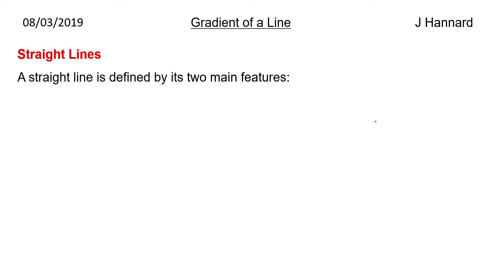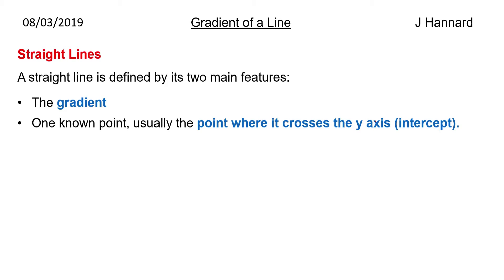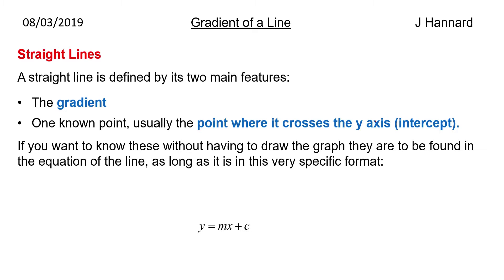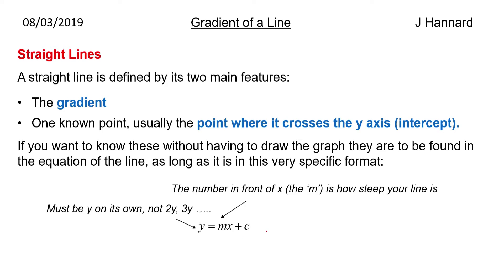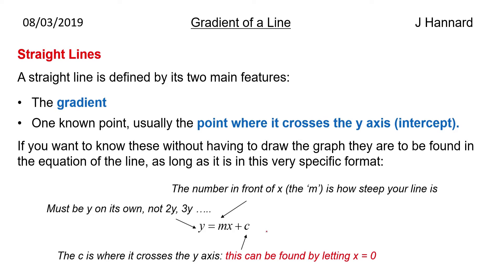What is a straight line? A straight line is defined by its two main features: one being the gradient and the other being one known point, so where it crosses the y-axis. We call that the intercept and we write these straight lines in the form y equals mx plus c, where m is the gradient and c is the intercept.